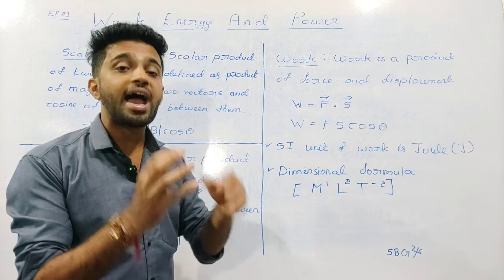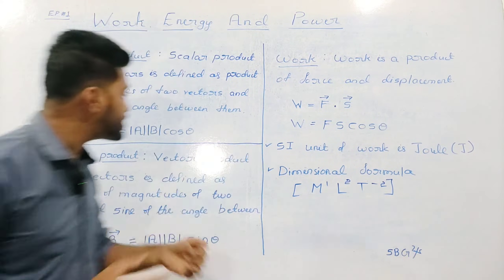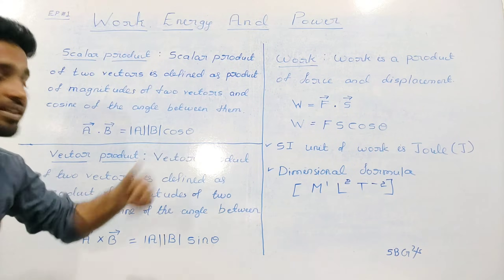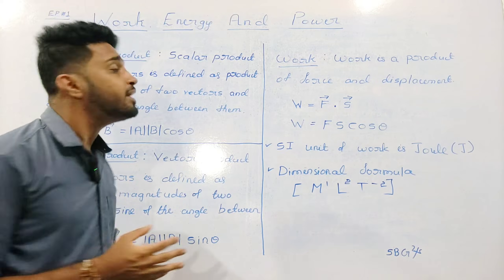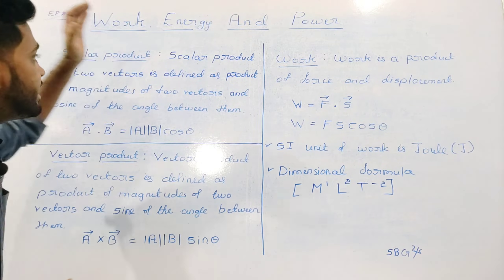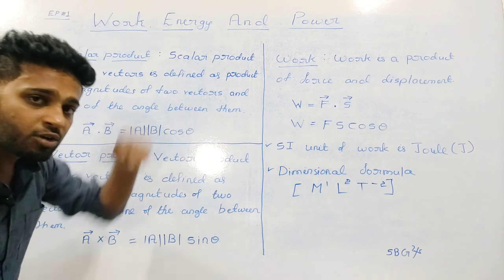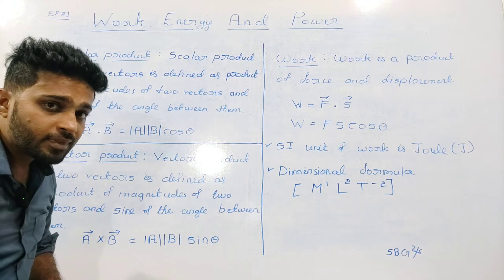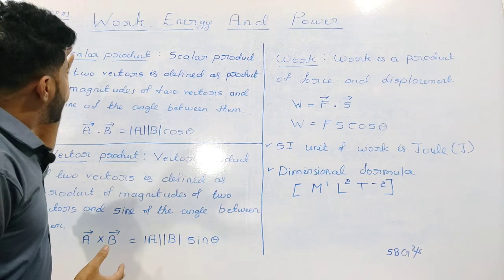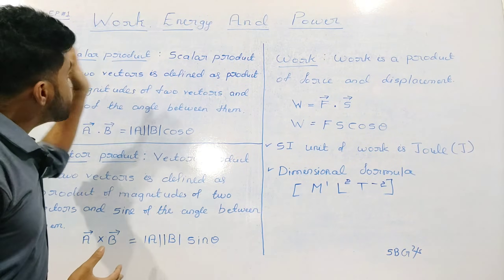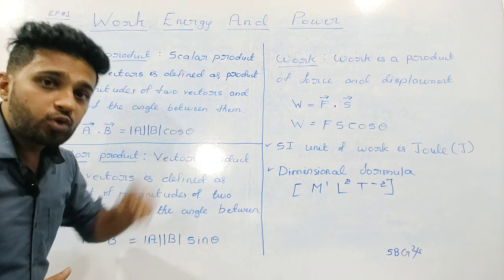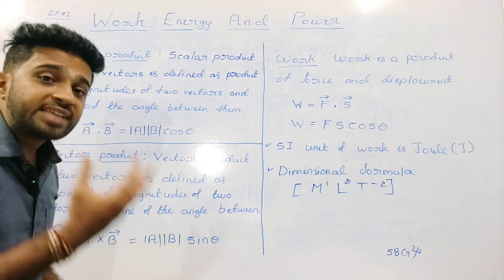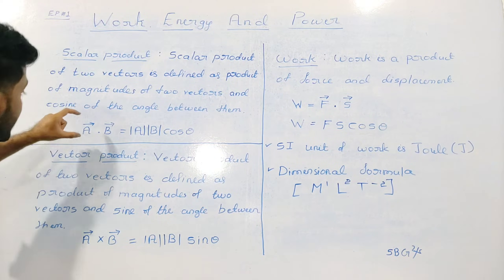So, theta is the angle between Vector A and Vector B. That is the definition of the Scalar Product of two vectors.